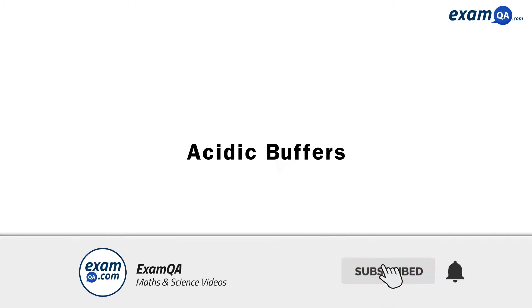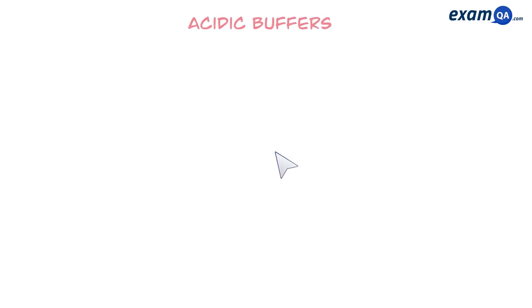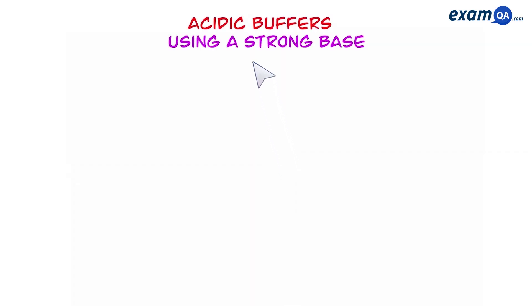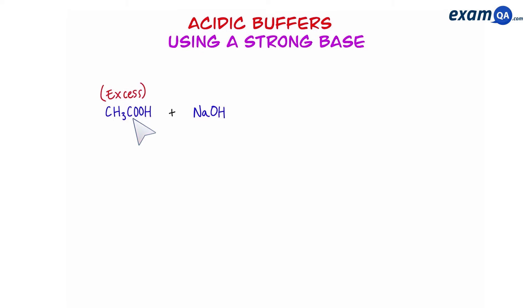Welcome. In this video we're going to be talking about how to make a buffer using a strong base. In the previous video we spoke about how to make a buffer using a salt, however in this one we're going to be speaking about how to use a strong base. To do that, first of all we need excess weak acid such as ethanoic acid, and then we're going to react that with a strong base such as sodium hydroxide.